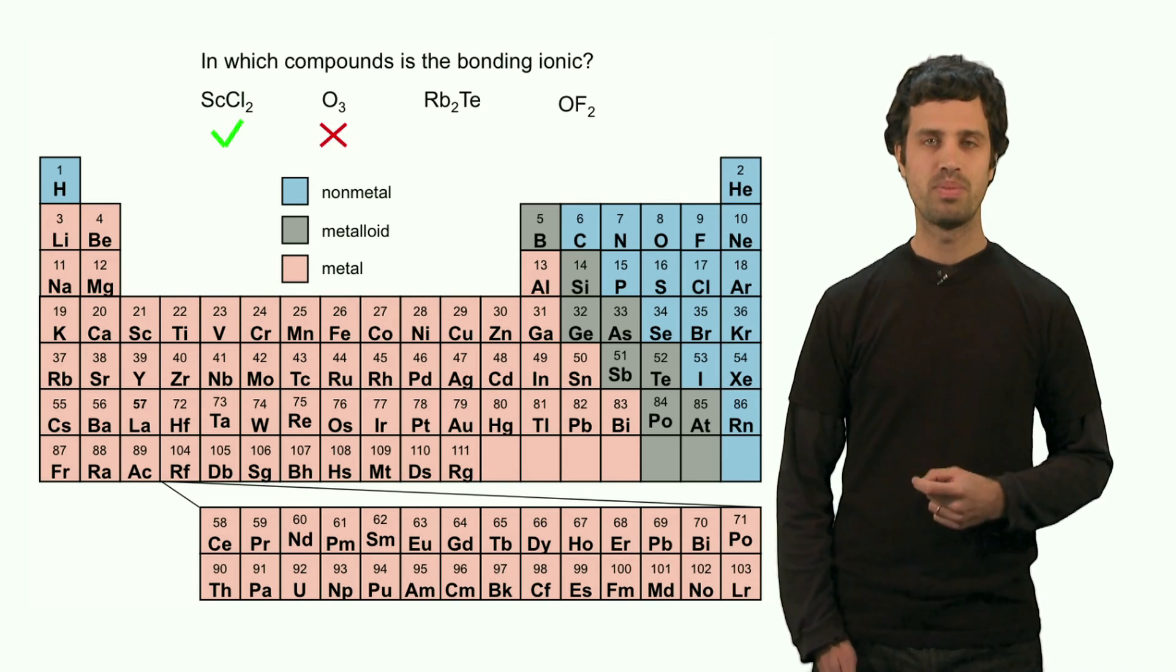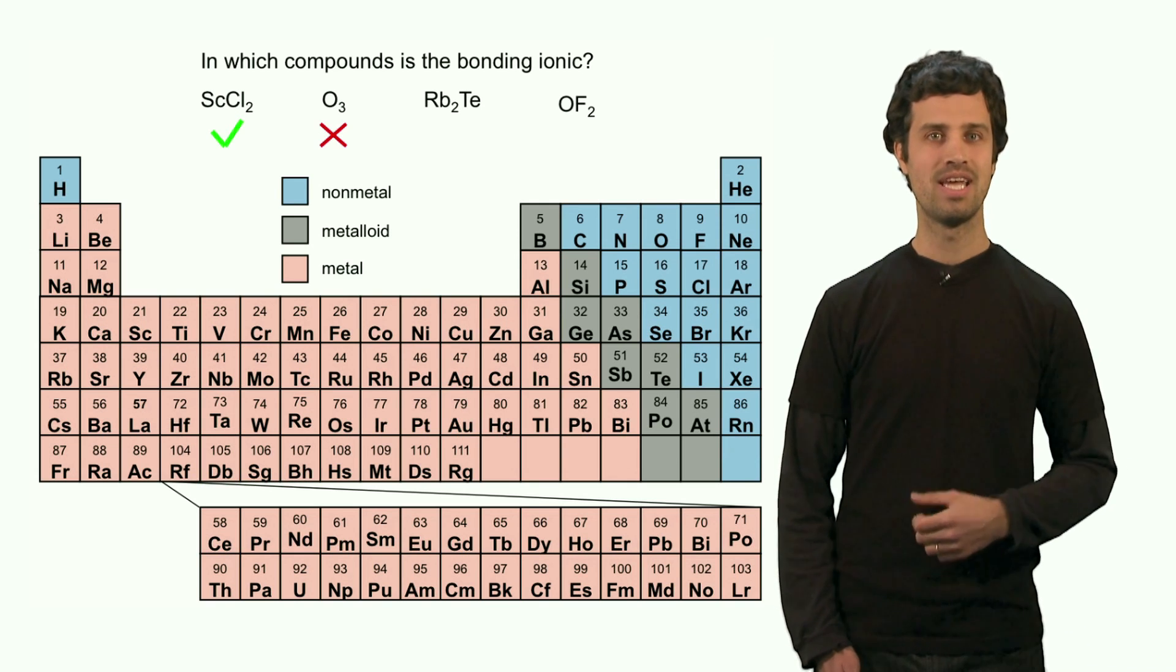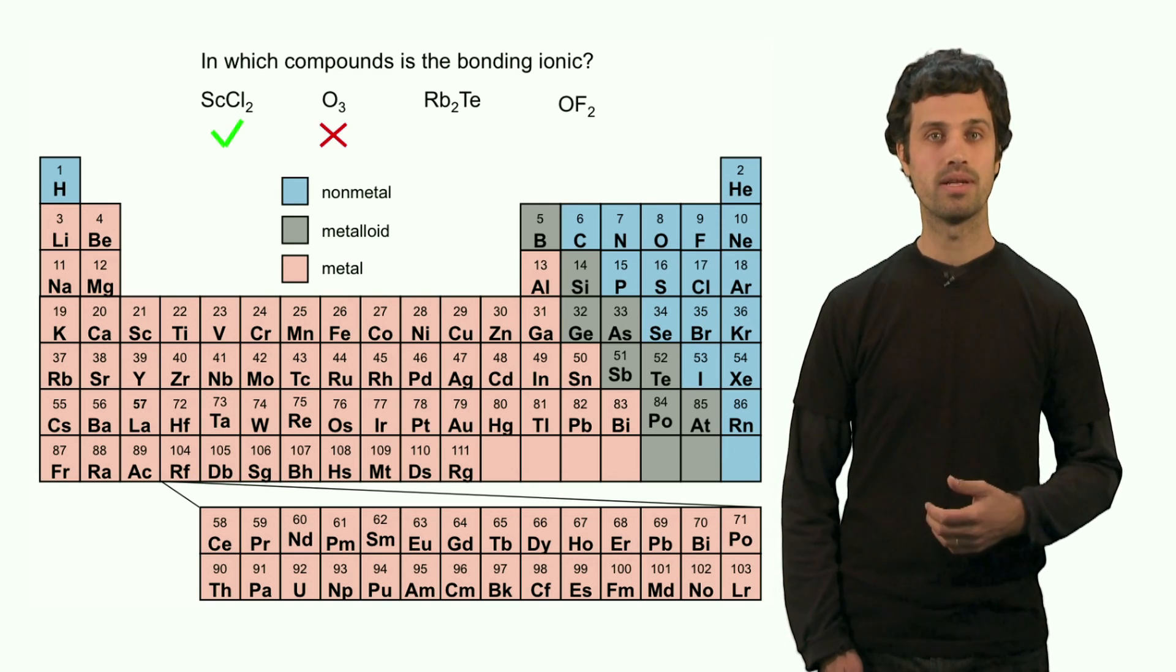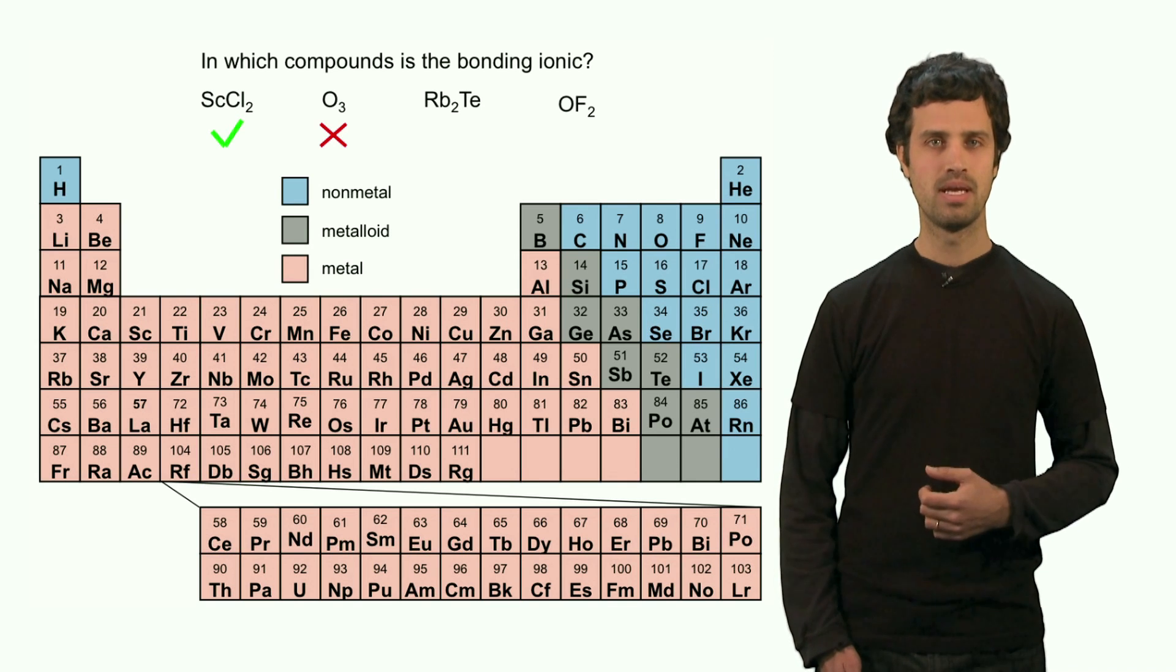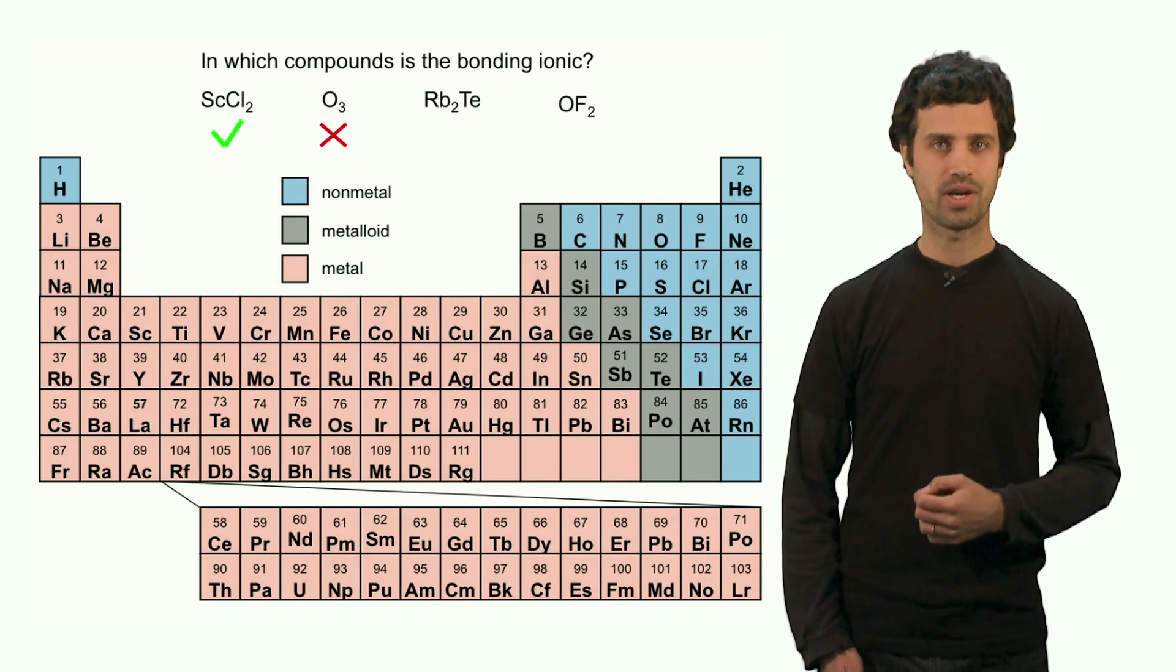Third, rubidium telluride, formed from rubidium and metal, and tellurium, which is a metalloid. Hence, the bonding between them is ionic. This is an ionic compound.